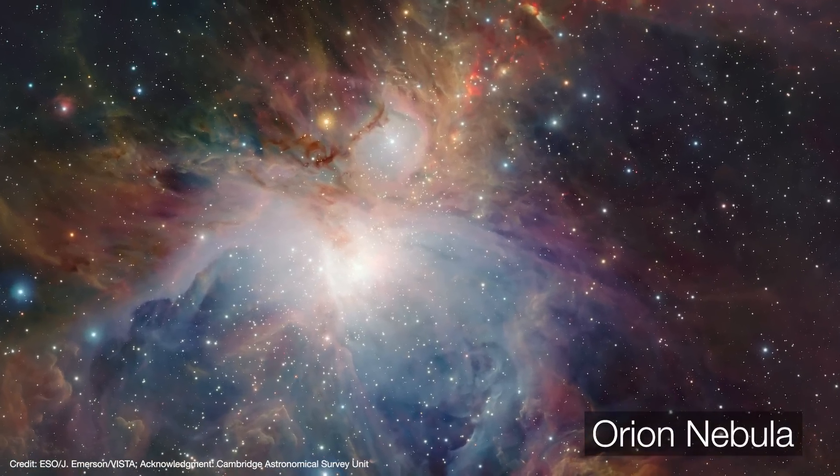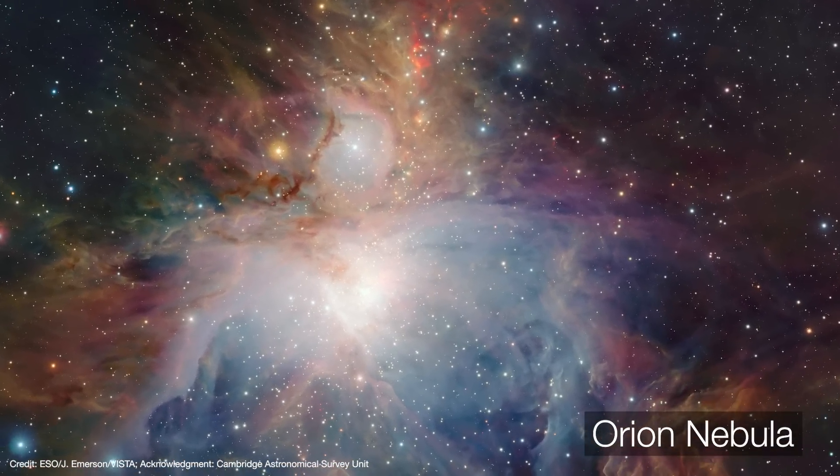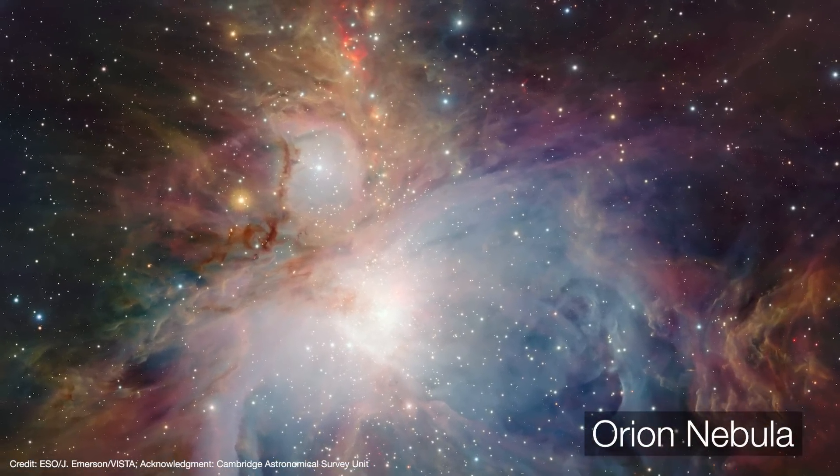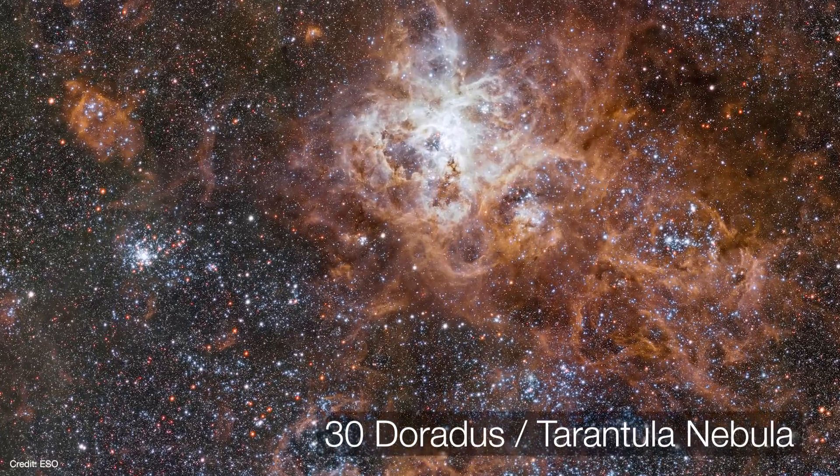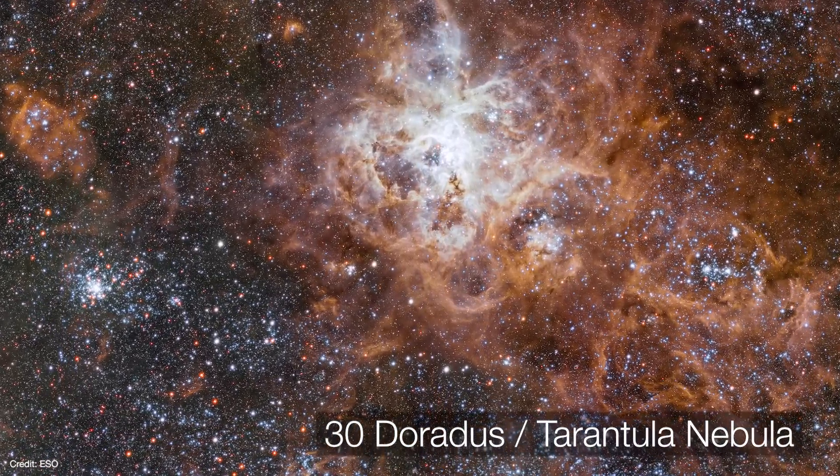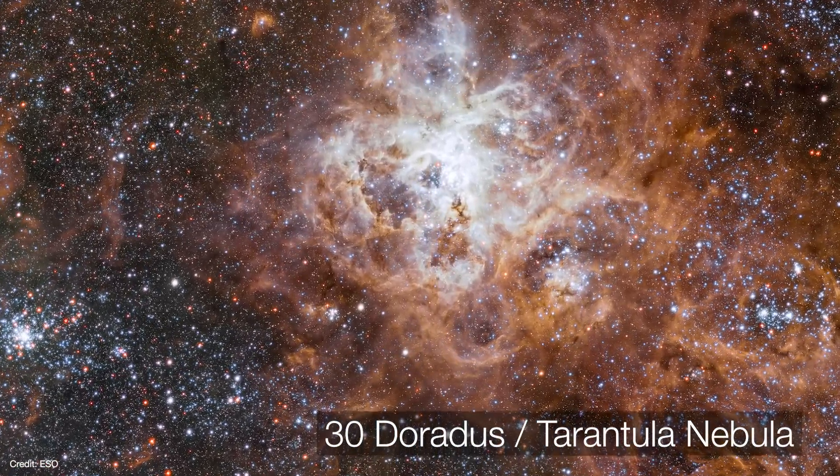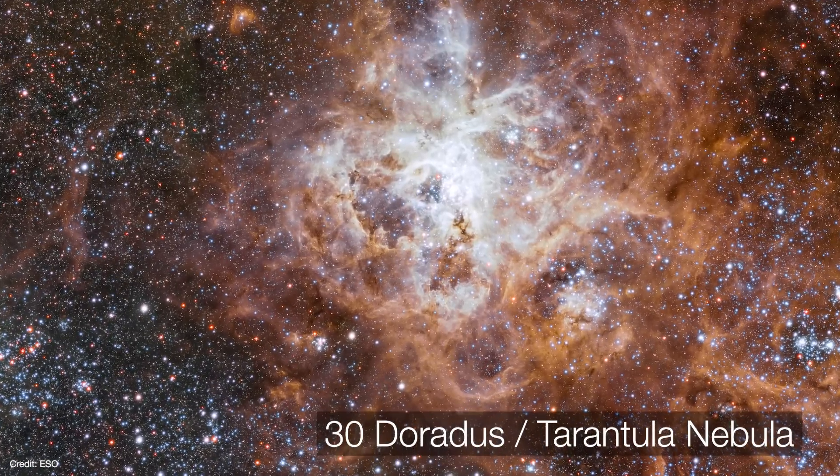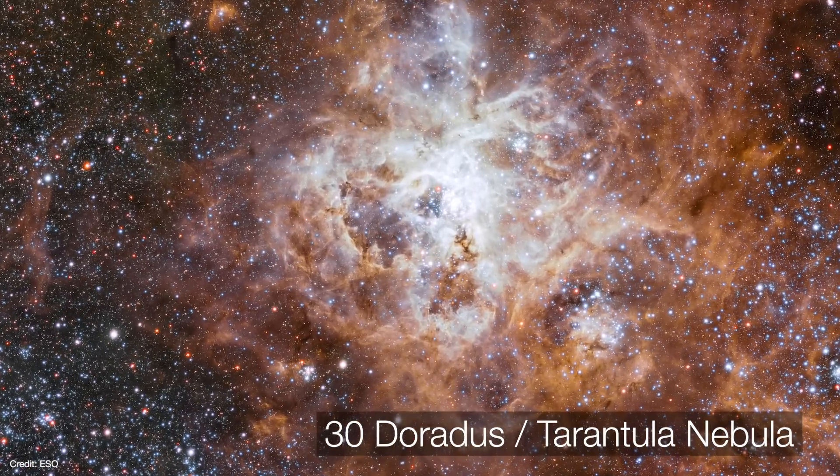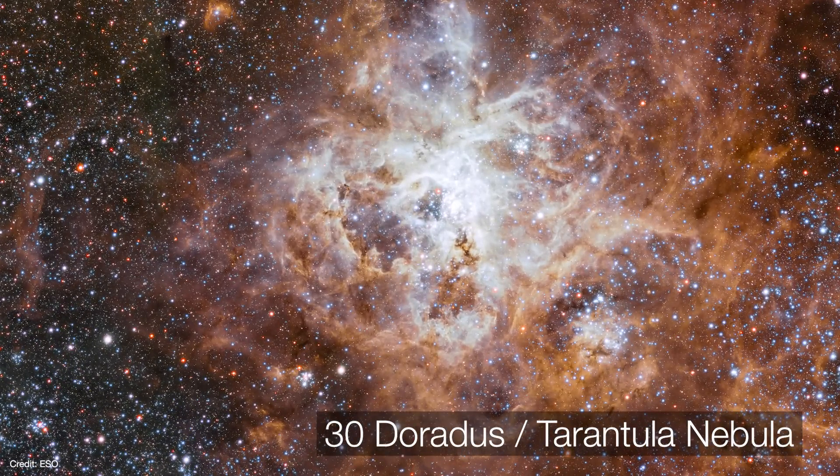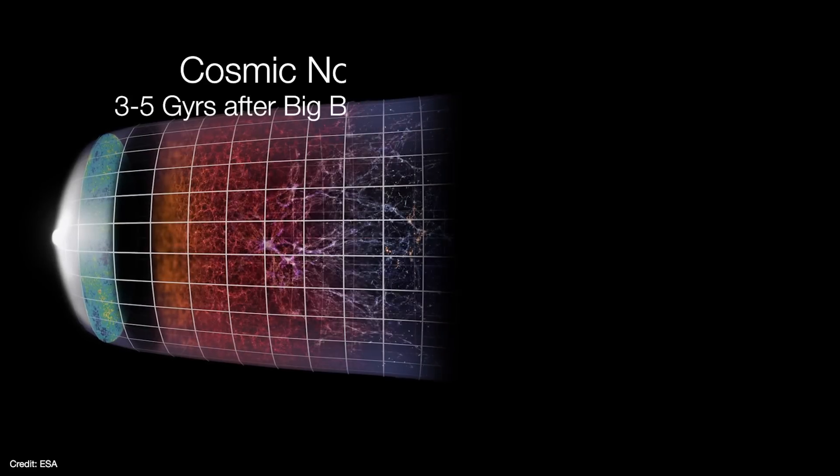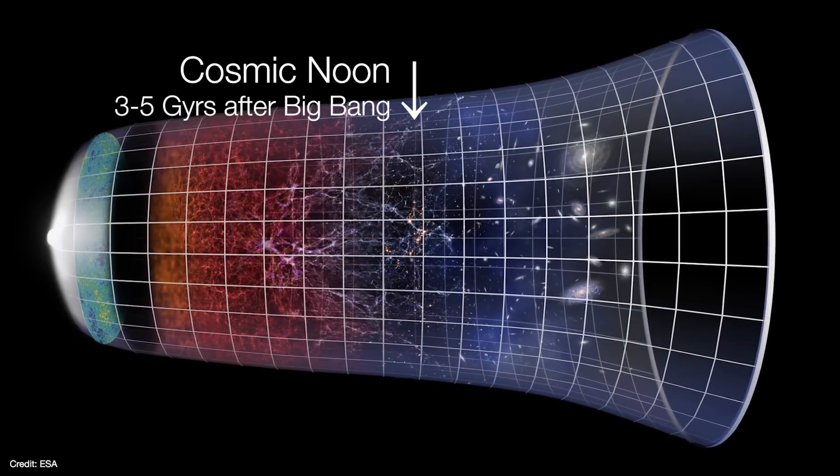H2 regions are not only beautiful, but they are natural laboratories in which to study star formation. And 30 Doradus is a particularly interesting laboratory because it's chemically similar to the gigantic star forming regions that existed when the universe was only a few billion years old. This period is known as the Cosmic Noon because it was the peak of star formation in the early universe. But not only is the Tarantula a throwback to the good old days of star formation, but it's close enough for us to study it in some detail.